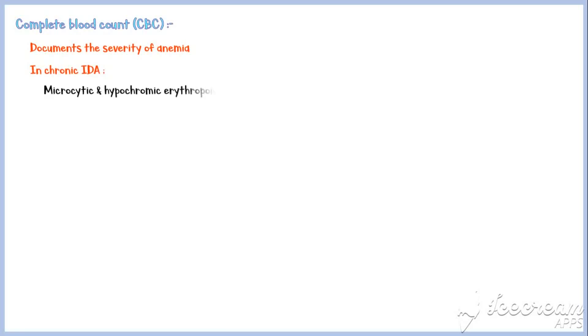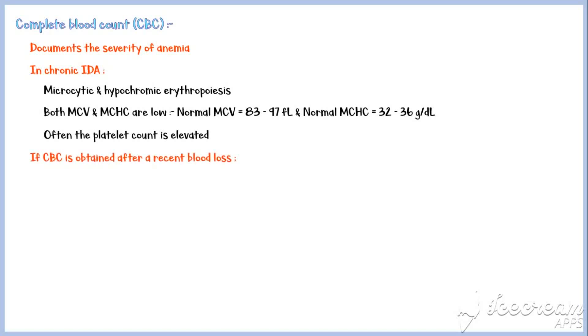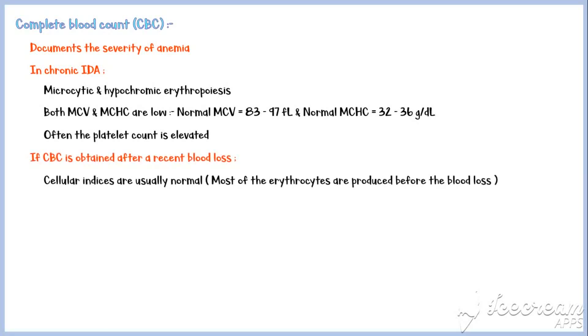Complete blood count documents the severity of anemia. In chronic iron deficiency anemia, it shows microcytic hypochromic erythropoiesis — both MCV and MCHC are low, and often the platelet count is elevated. If the complete blood count is obtained after a recent blood loss, cellular indices are usually normal because most erythrocytes are produced before the blood loss, as they have a lifespan of 120 days.